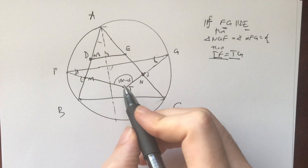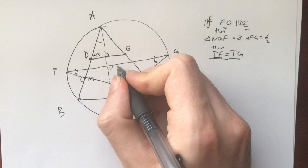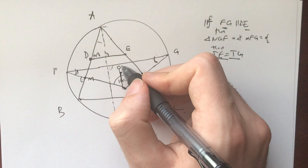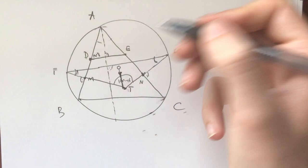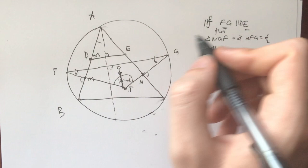So we need to prove that TG is TF. For me, the first thing that really comes to mind is, if I do O, the circumcenter of the circle, then I know OG is OF. So maybe the only thing I need to prove is that if OT is perpendicular to FG, then I've done that. I need to prove that OT is perpendicular to FG, or maybe I can use something about OT to prove that.